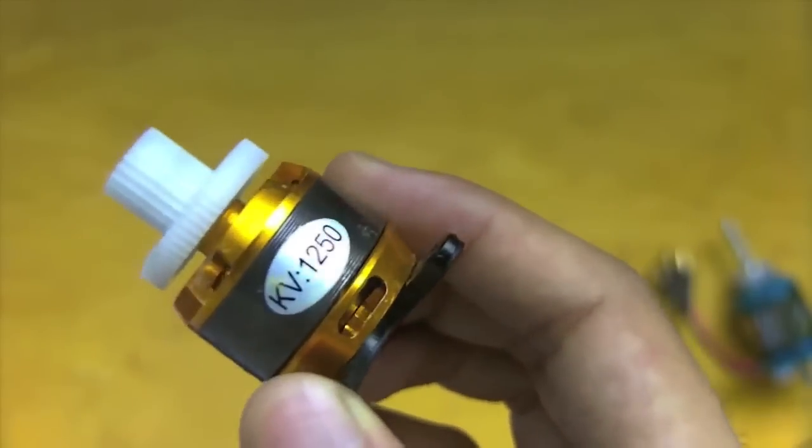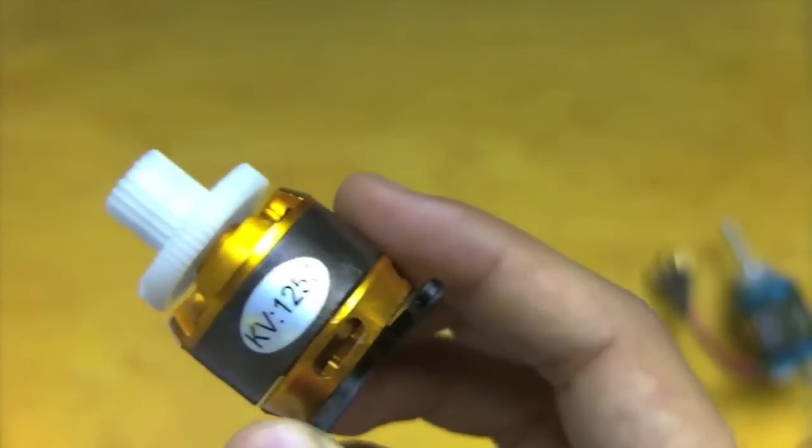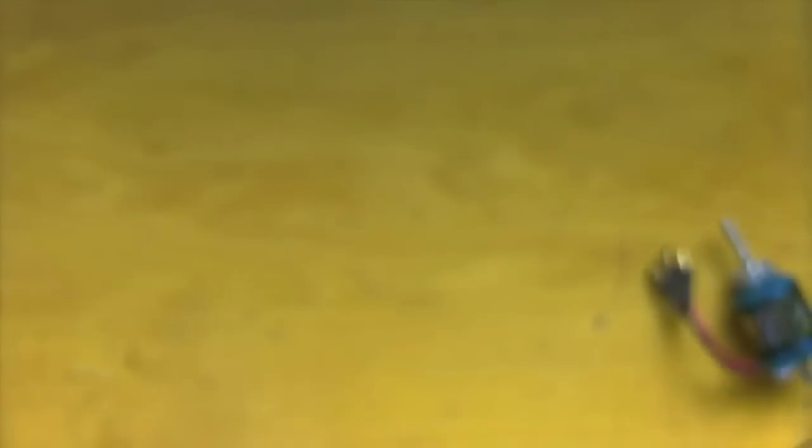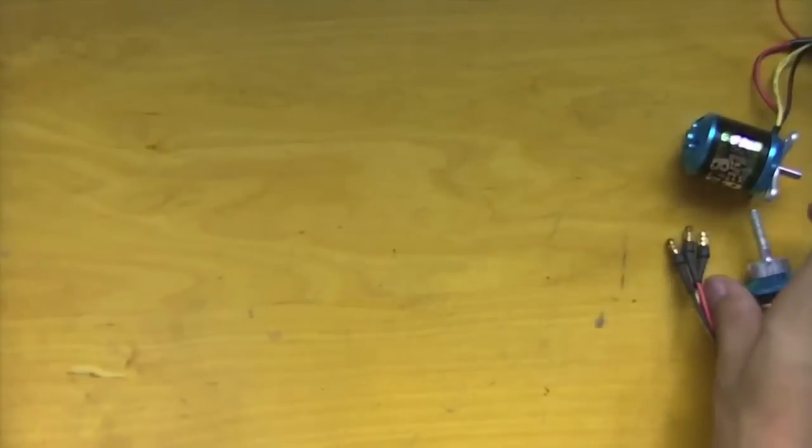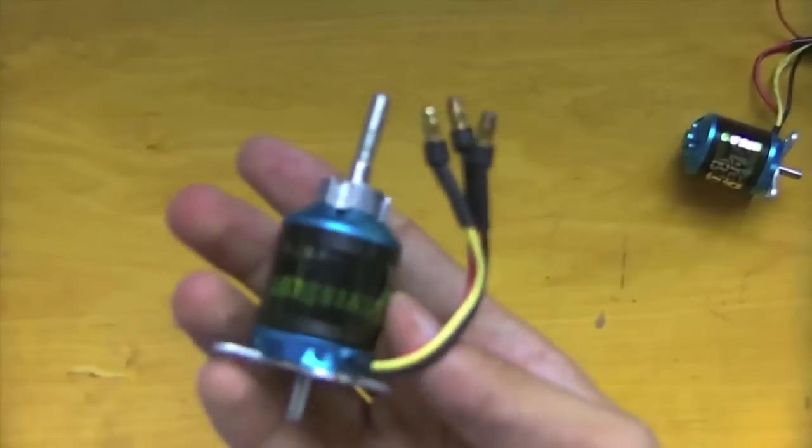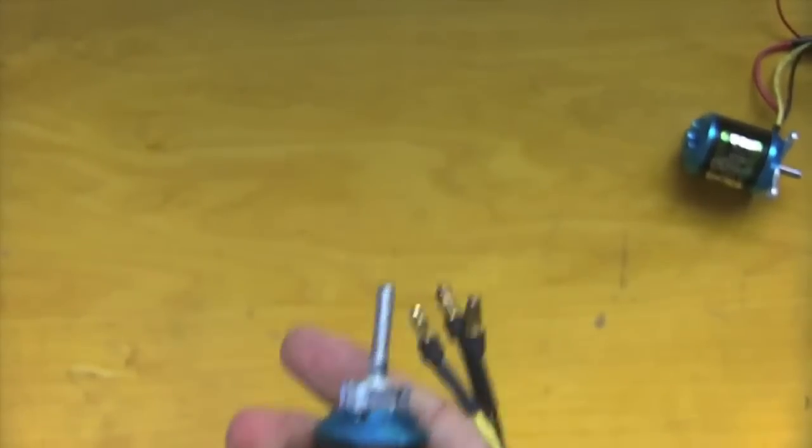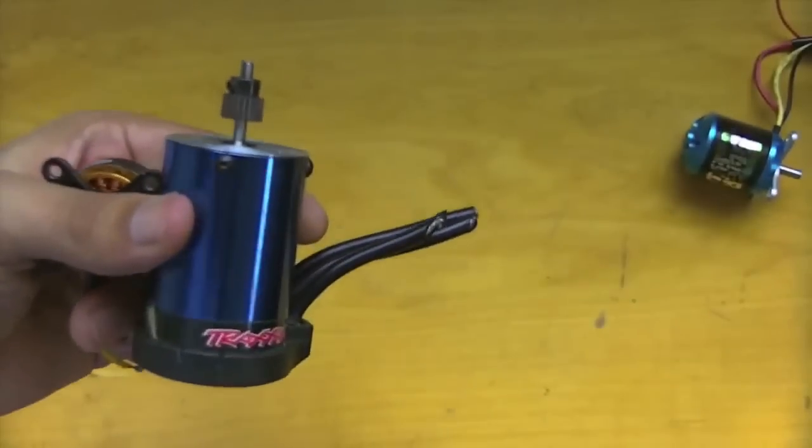Out-runners, like this one, have much lower KV values than in-runners. For example, this motor, the blue one, has a KV value of only 750, whereas this in-runner has something around 3,000 or 4,000 KV.